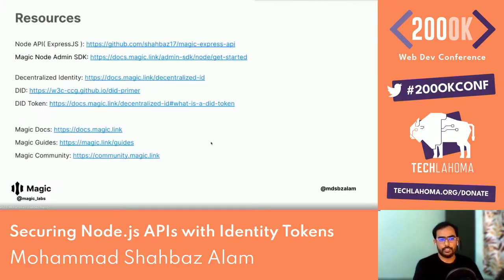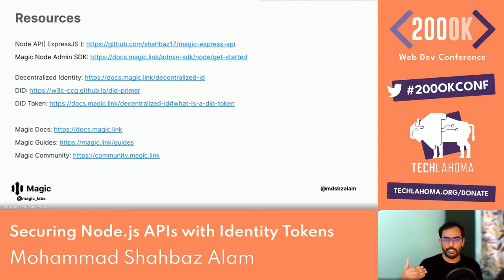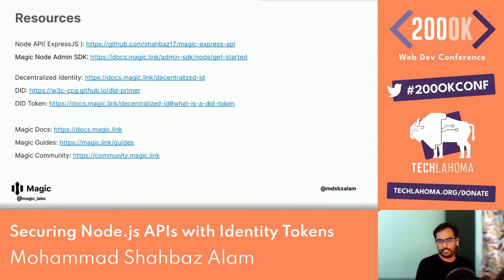The resources for this talk: the Node/Express API can be found on my GitHub repo called magic-express-api. Learn more about Node admin on docs.magic.link — including what decentralized IDs and DID tokens are. There are also multiple guides such as setting up Next.js with Magic. Join the community at community.magic.link. Tag me on Twitter @mdsbzalum or @magic_labs for questions.